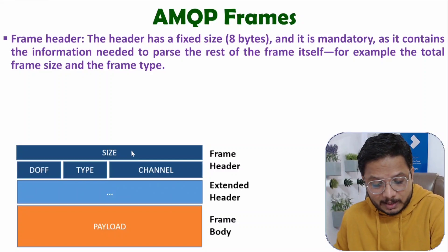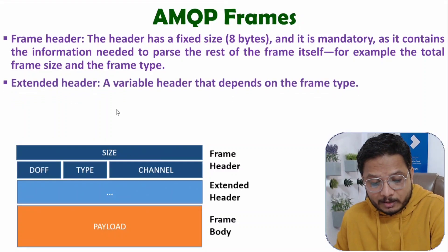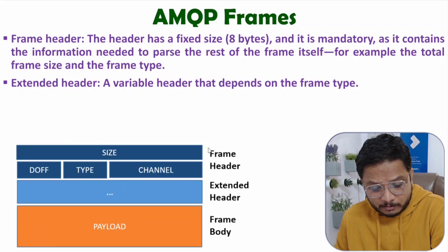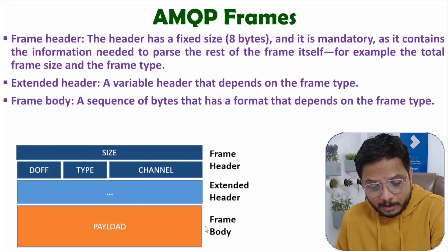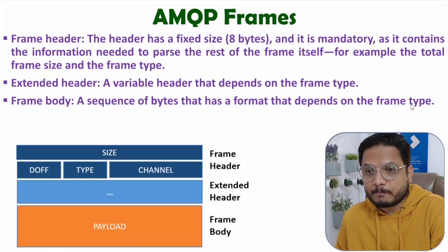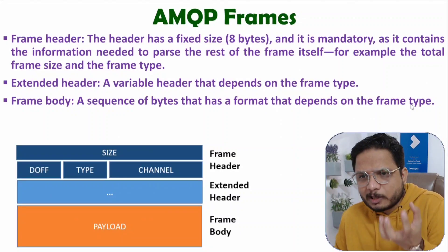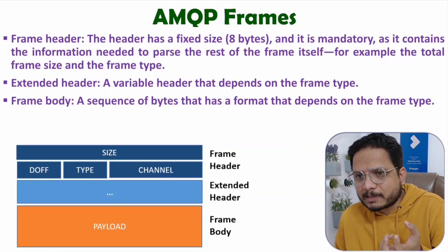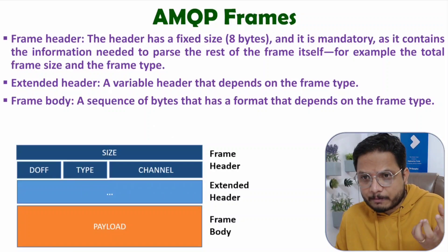The frame header has a size of 8 bytes and is mandatory. It contains information needed to parse the rest of the frame, such as total frame size and frame type. The extended header has a variable size depending on frame type. In the frame body, there is a sequence of bytes whose format also depends on the frame type.